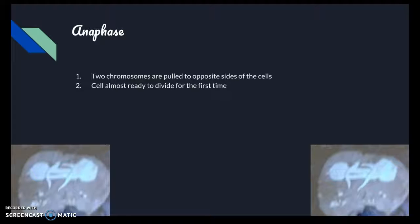Anaphase two: chromosomes are pulled to opposite sides of cells. Cells almost ready to divide for the second time.